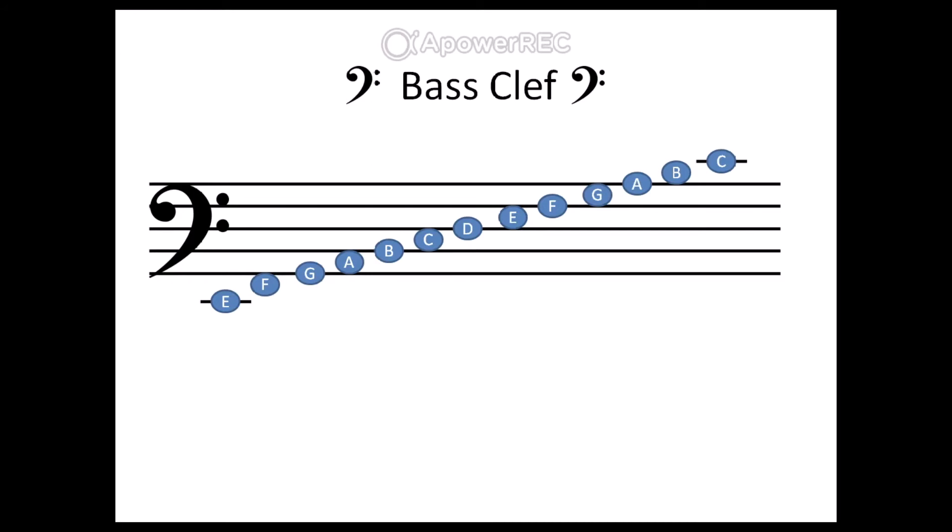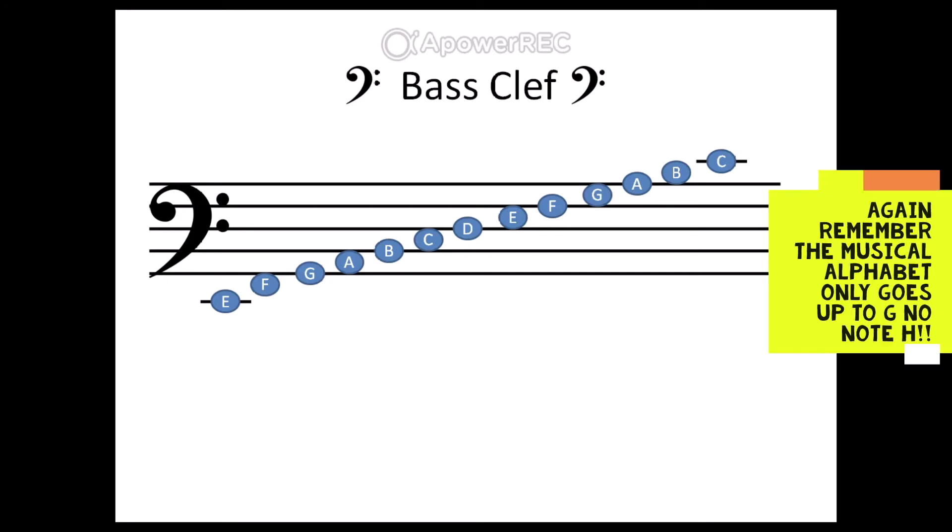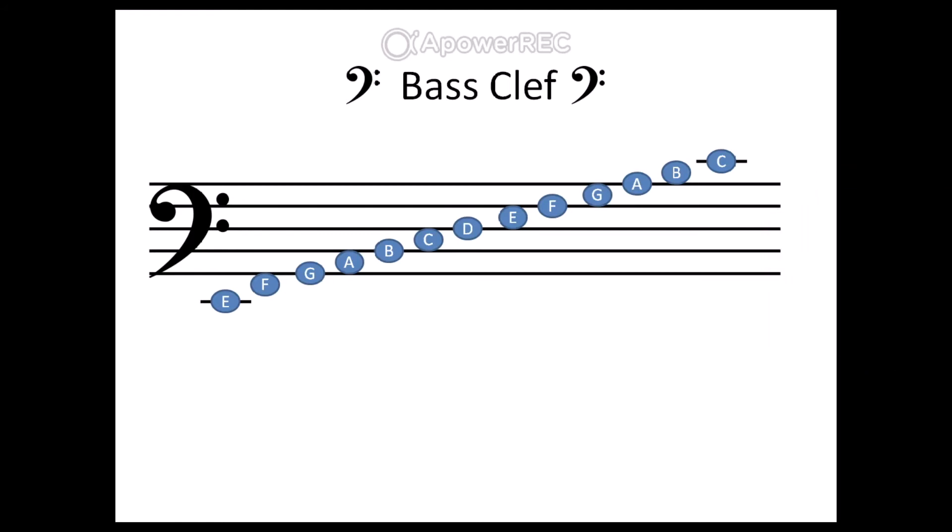It's really easy to work these out now that we know what the bottom line and the top line are. We can see that the bottom line is a G, so we just count backwards in the alphabet: G, F, E. And we can see that the top line is an A, so we just count forwards in the alphabet: A, B, C.